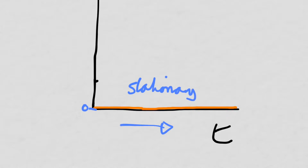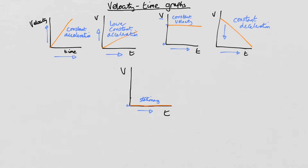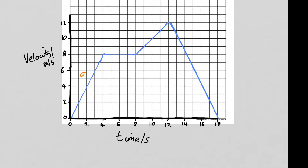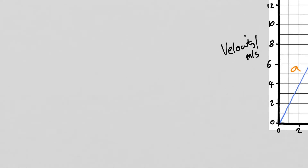Now let's look at a graph with actual values. This one has four distinct sections. Section A shows constant acceleration — a straight line going up. Section B is constant velocity. Section C is constant acceleration again, but slightly lower than section A. And section D is going down, so it's decelerating. On a velocity-time graph the gradient gives you acceleration — it doesn't give you velocity anymore — and we'll see why in a minute.